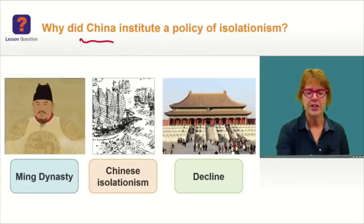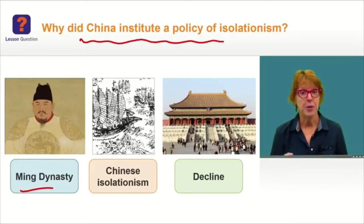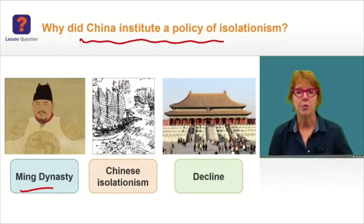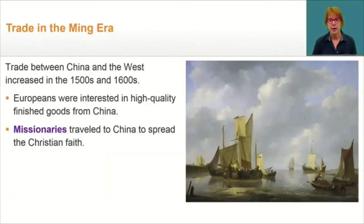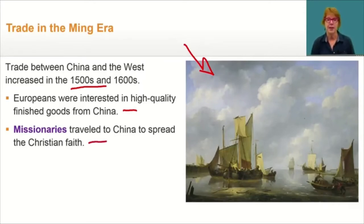Getting back to our lesson question — why did China institute a policy of isolationism? — you now know that the Ming Emperor reintroduced the Confucian style of government and about the great Chinese explorer Zheng He, who traveled all the way to Africa, but whose voyages would have some unexpected consequences. As the age of exploration got underway, trade increased between China and the West in the 1500s and 1600s. Europeans were interested in high-quality finished goods from China, and missionaries traveled to China to spread the Christian faith. But this increased contact with the West worried Chinese officials.